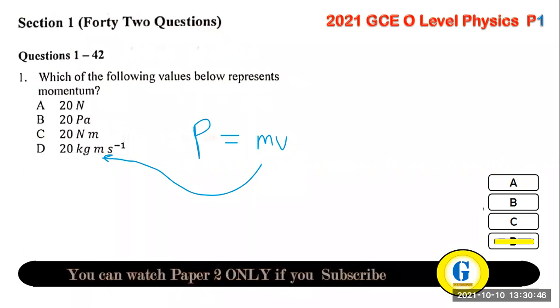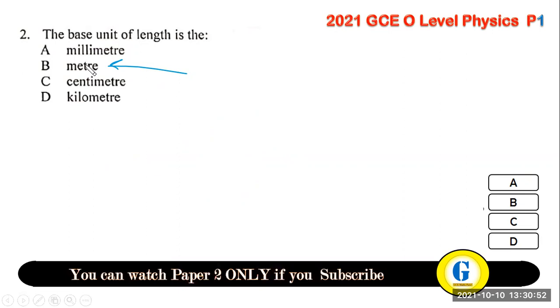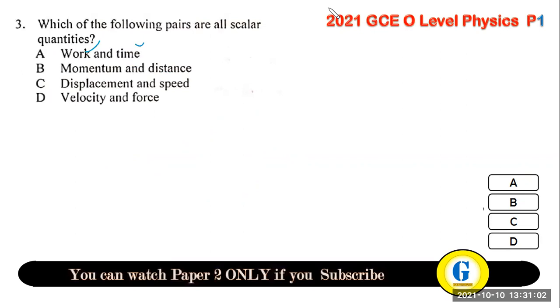Question 2: the base unit of length is the metre. This is Form 1 and Form 2 work — the basic unit of length is the metre. The answer is B.